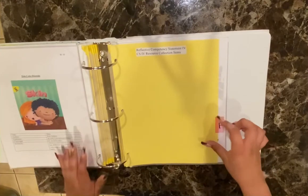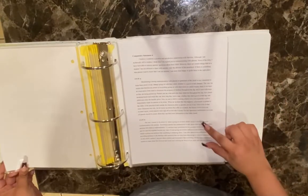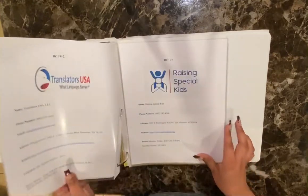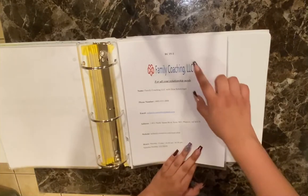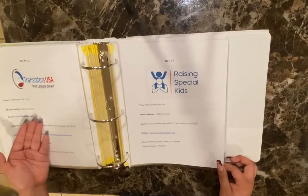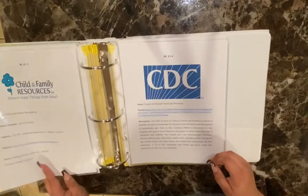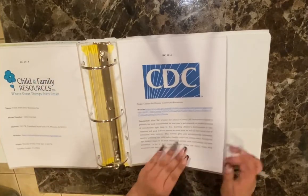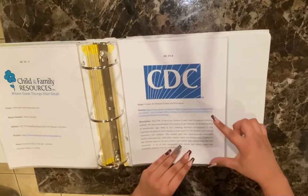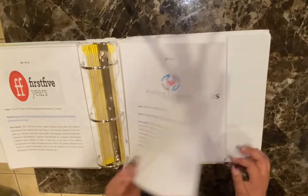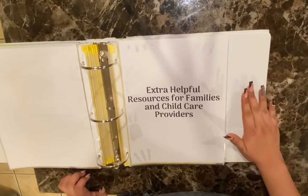Moving on to Tab F, we're going to talk about how to establish a positive and productive relationship with families. The resource items are places you can guide parents to in your area — family therapy, translation services, special needs resources. These are labeled 'child and family resources.' Beyond RC4, there are websites and articles to share with parents, like First Five Years.